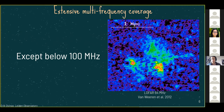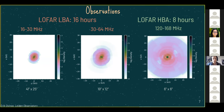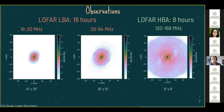The only published image below 100 MHz of this cluster was published by Eric's supervisor during his PhD — that's the image to beat. The approach uses observations at three frequency ranges: the standard LOFAR HBA observation from the 2-metre sky survey at 144 MHz (8 hours), and then 16 hours of LOFAR LBA observations split into the 16–30 MHz and 30–64 MHz bands. The UV coverage and approximate resolution for each frequency range are shown.